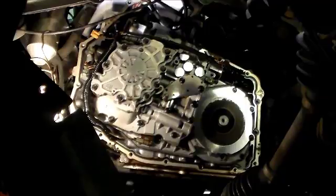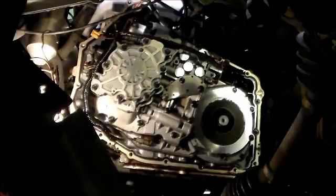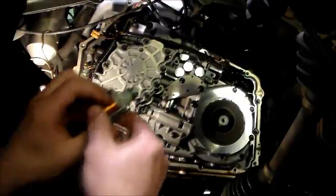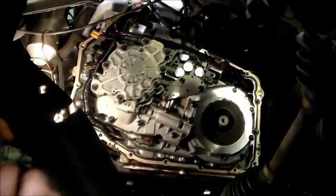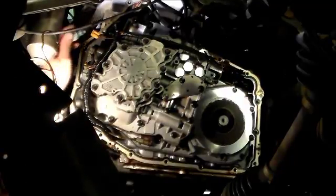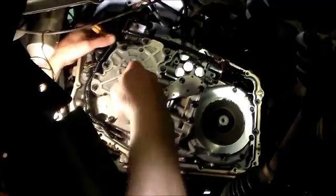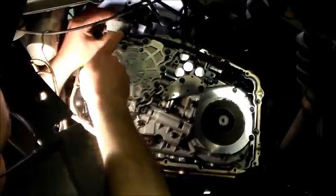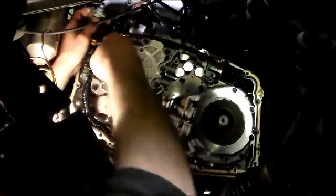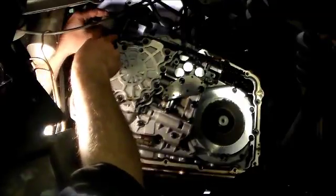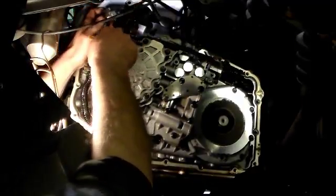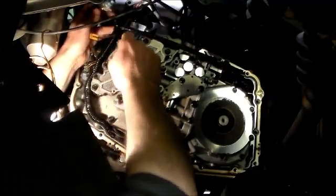And now we're going to put in solenoid A. This solenoid A, there's a valve I believe behind this. So this tab goes in the slot so the solenoid won't turn or anything and it's installed correctly.